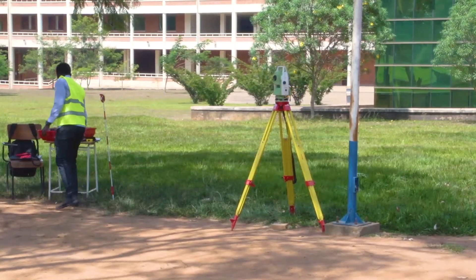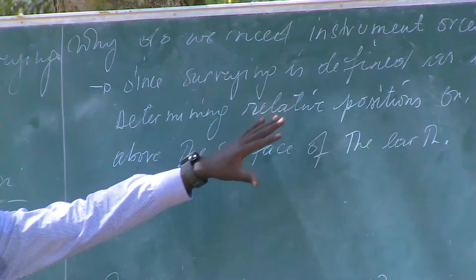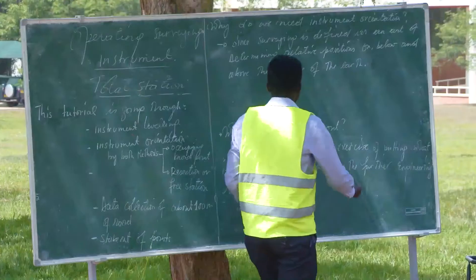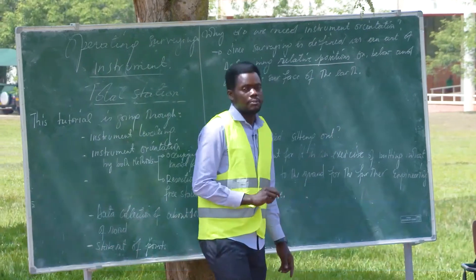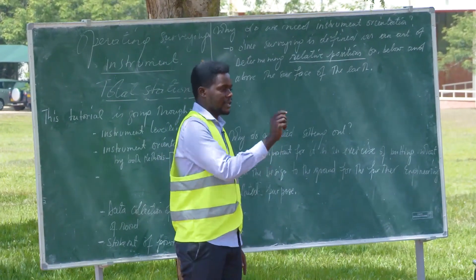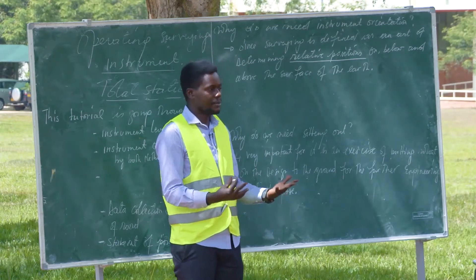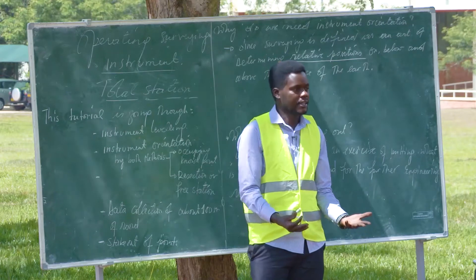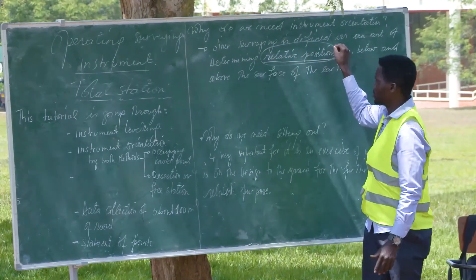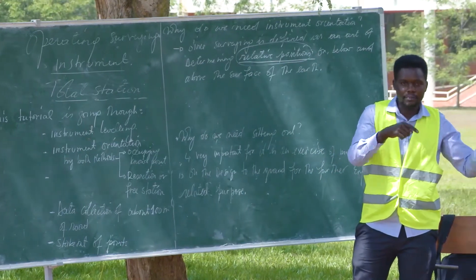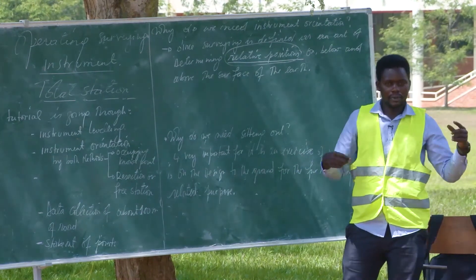I would like first to introduce this a bit. Why do we need instrument orientation? Since surveying is defined as an art or science of determining relative positions, the phrase 'relative positions' tells us that you have no choice but to make this instrument orientation. That instrument where it stands now, it doesn't know where it is on this earth's surface. It doesn't know that it is located at IPLR City Guard. So since you are applying it in surveying as an art of determining position, you have to tell this instrument that you are located here at IPLR City Guard, then give me all the data which are relevant to this area. That's why we need instrument orientation.